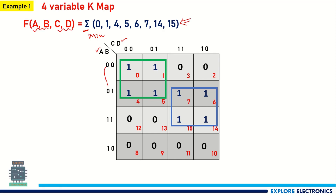For the green group: A is 0, B is changing (neglect B), C is 0 (so C-bar), and D is changing (neglect D) — giving A-bar·C-bar. For the blue group: C is 1 (keep C), D is changing (neglect D), A is changing (neglect A), and B is 1 — giving B·C.